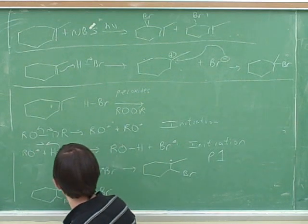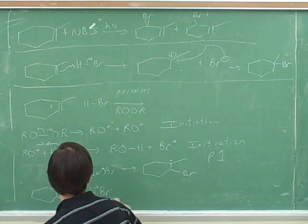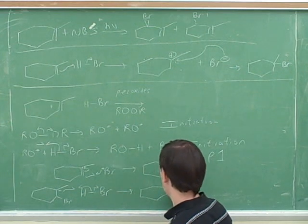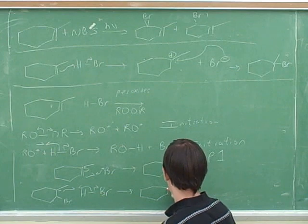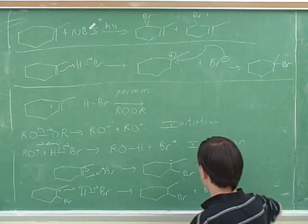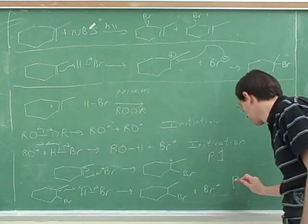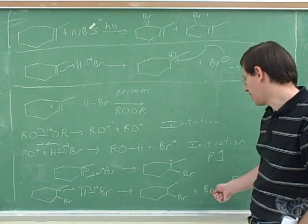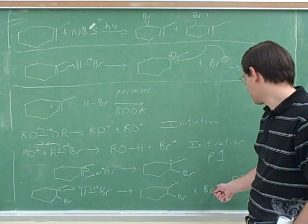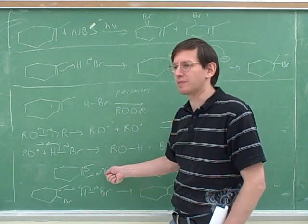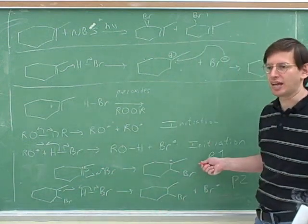Now we attack another hydrogen bromine. Propagation step two. Okay. And then what is this bromine radical going to do? Well, notice that a bromine radical is the product of propagation step two, but it's also the starting material for propagation step one. So we can go back and do another propagation step one. Here's where we get the chain reaction again. This is another chain reaction. We can repeat these two propagation steps many, many times.